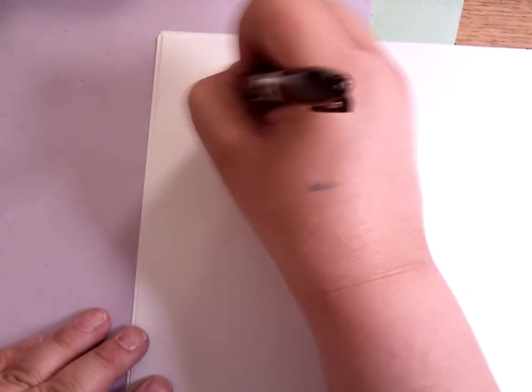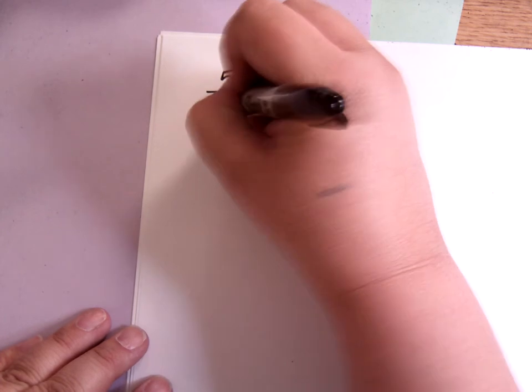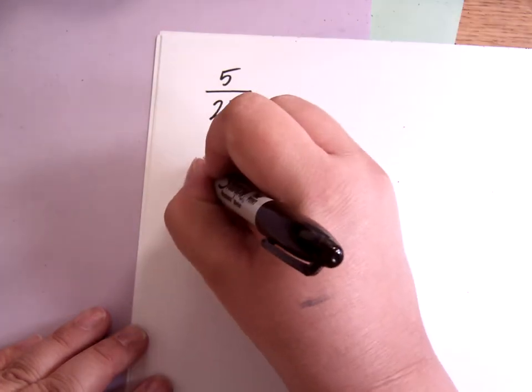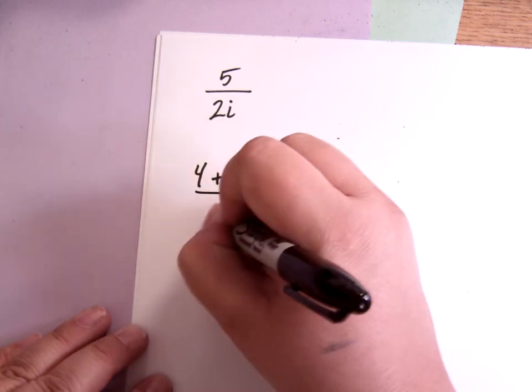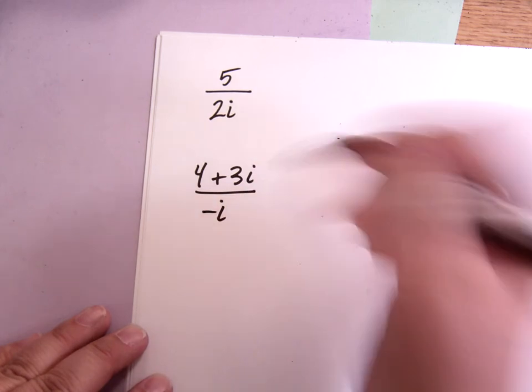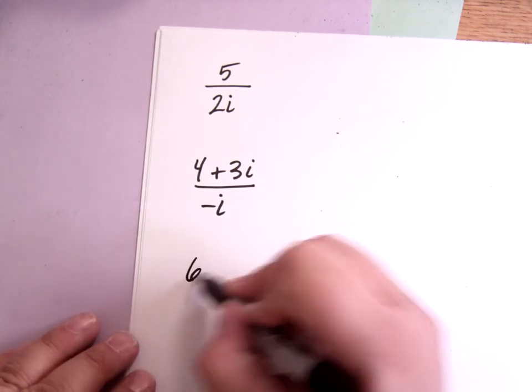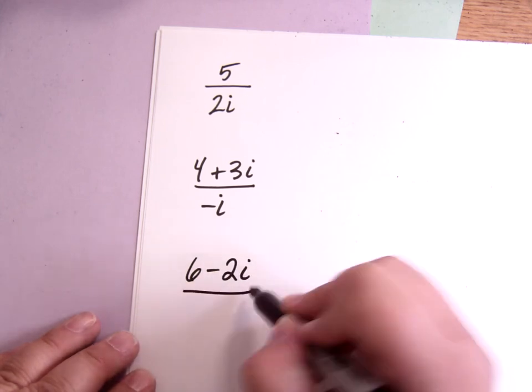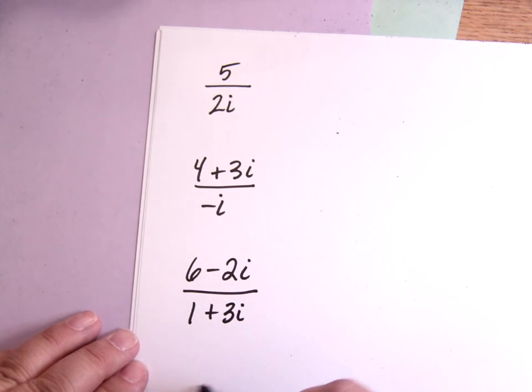A couple of examples. We did spend a little bit more time on this, but let me just give you some more practice problems for rationalizing your denominator, which basically means I have an i in the denominator. That's not okay, so I need to get rid of it. Okay, if you want to just pause after I've written these and try them, that's perfectly good.